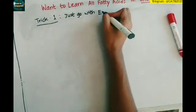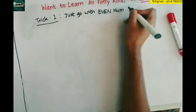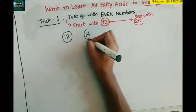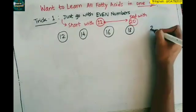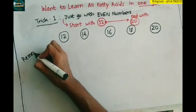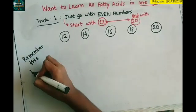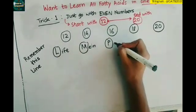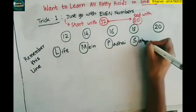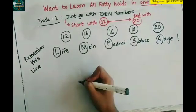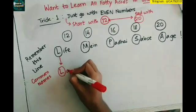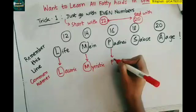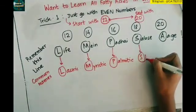Trick number one: just go with even numbers. All biological fatty acids are having even numbers, so start with 12 and end with 20: 12, 14, 16, 18, 20. Now you have to remember this line: life may but I sab se aage. This is a practical line as well, so L M P S A.